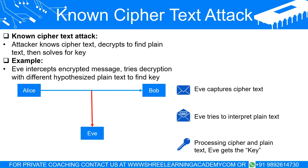In a known cipher text attack, the attacker has access to a piece of cipher text but doesn't know the corresponding plain text. The attacker's goal is to decrypt the cipher text using the unknown key, thereby obtaining the original plain text. Imagine that Eve intercepts an encrypted message from Alice to Bob but doesn't know what it says. She uses various methods to attempt decryption, each time hypothesizing a different plain text and correlating it with the cipher text to try and reveal the key. This method can be time consuming and complex, but with enough computational power or clever algorithms, it can be done.